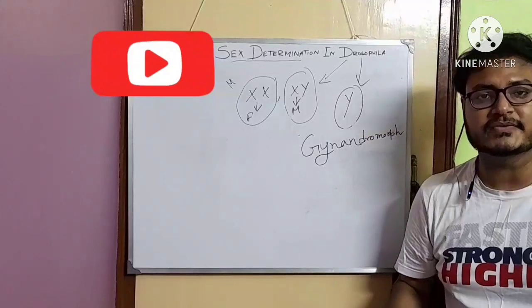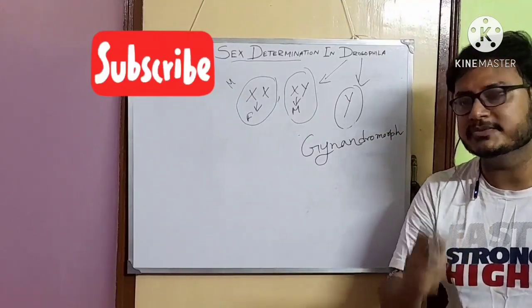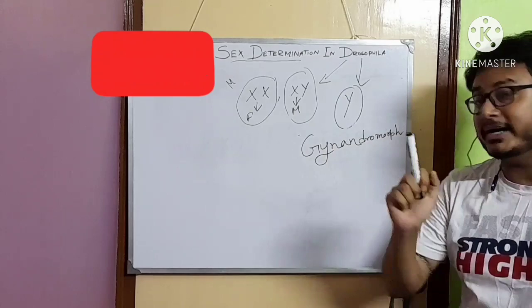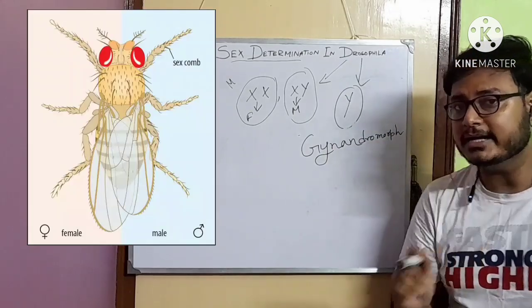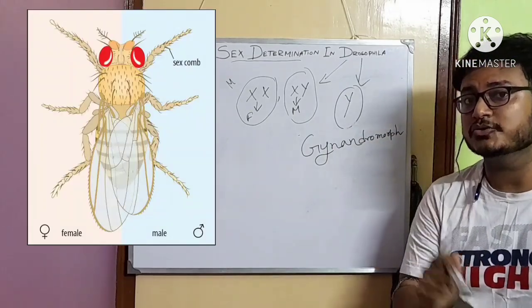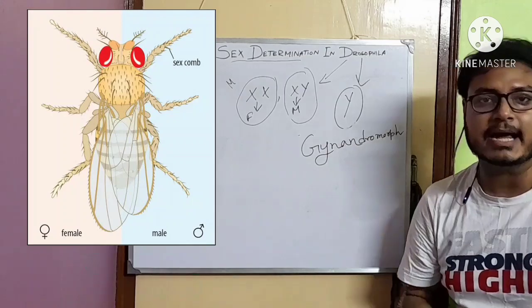In Drosophila and in insects in general, we observe Gynandromorphs. Gynandromorphs are organisms that show both male and female characteristics.